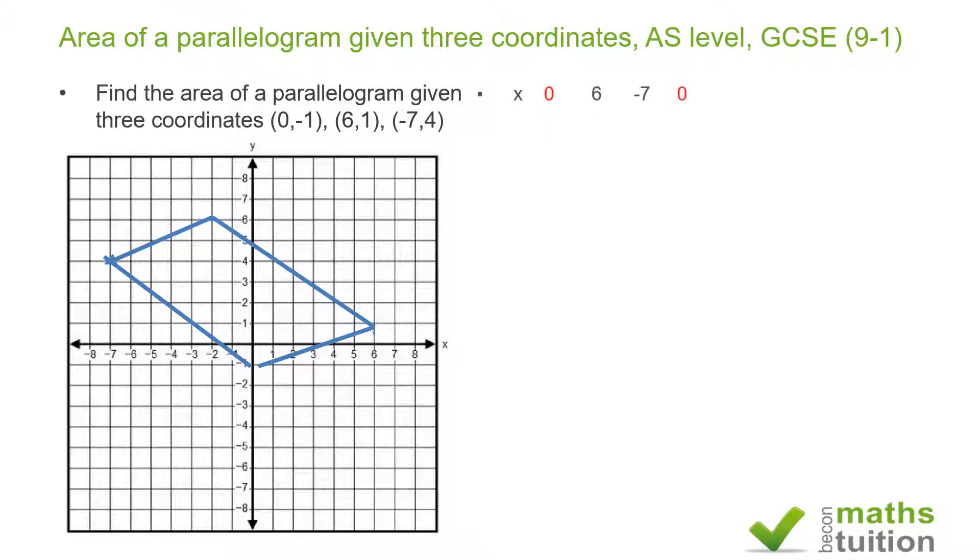What I've done is to set up the x coordinates of 0, 6, and -7, and then I've repeated the very first one. It doesn't matter where you start, you might get a negative answer but it doesn't matter. Similarly, I've got my y coordinates there as well, and again I've repeated the first y coordinate.